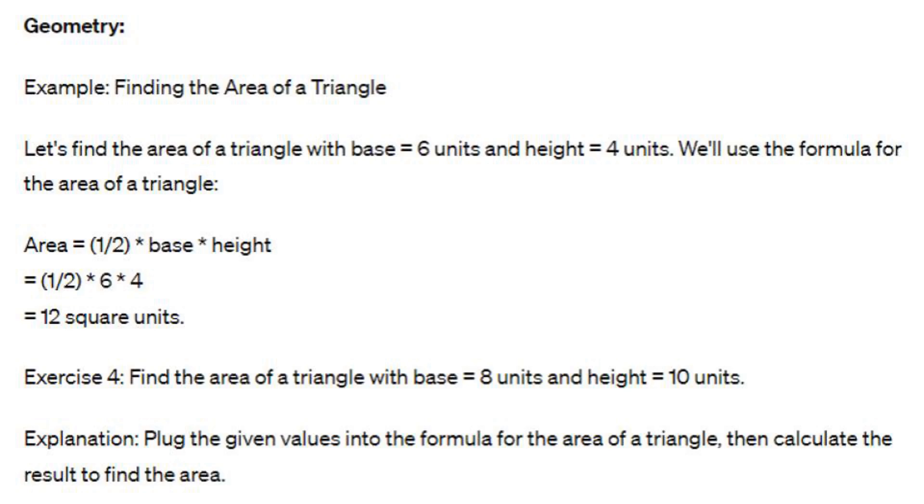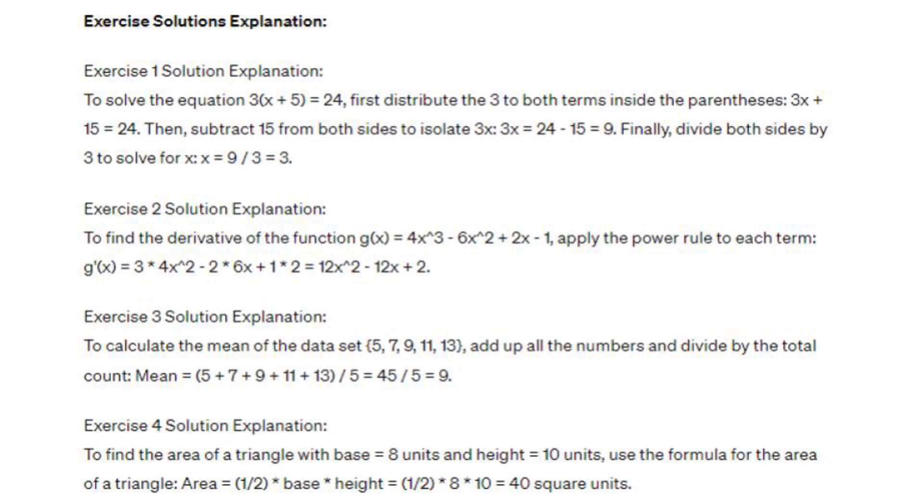Exercise solutions explanation. Exercise 1 solution: To solve the equation 3x plus 5 equals 24, first distribute the 3 to both terms inside the parentheses. 3x plus 15 equals 24. Then subtract 15 from both sides to isolate 3x. 3x equals 24 minus 15 equals 9. Finally, divide both sides by 3 to solve for x. x equals 9 divided by 3 equals 3.